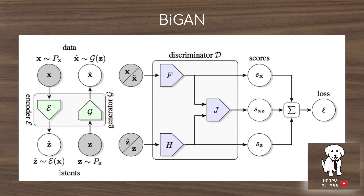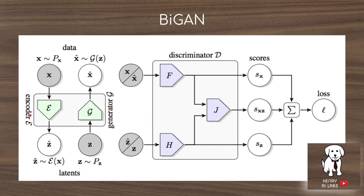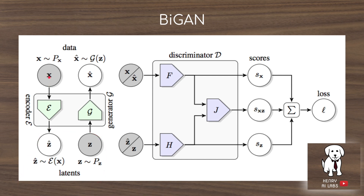The BiGAN model works by having the generator sample Z from a Gaussian prior and produce images that the discriminator classifies as real or fake. There's also an encoder part that maps images back into latents, so this latent space corresponds with different images and forms a feature space. You can then stack a logistic regression classifier on top to train ImageNet classifiers, CIFAR-10 classifiers, and similar tasks.